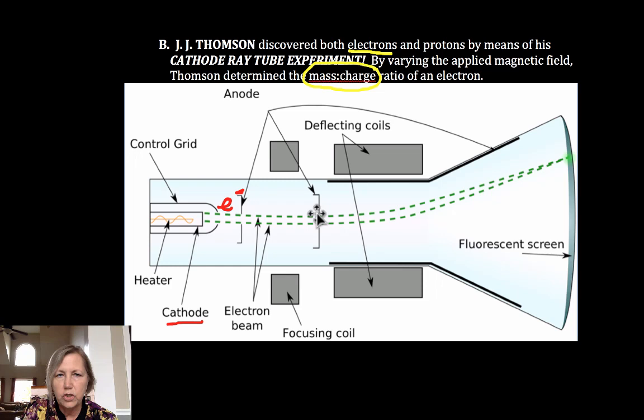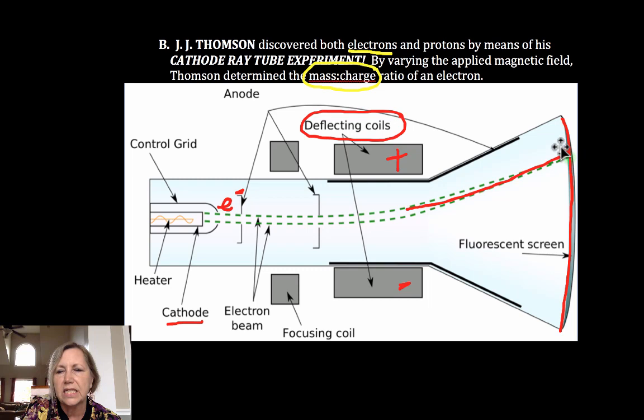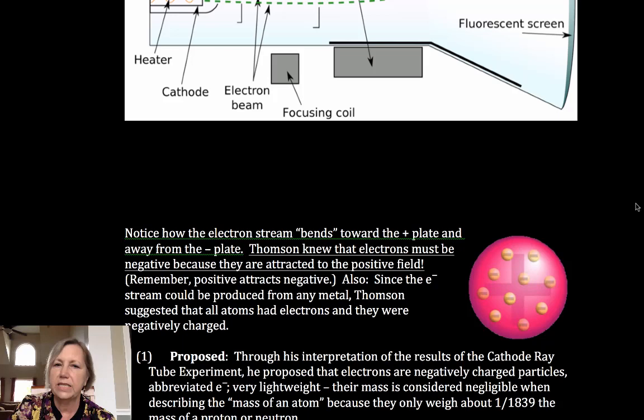So what he did is he had a cathode ray that emitted electrons. And they went through this focusing coil. You don't need to worry about that so much. Here's what's key are these deflecting coils. And you can do this with a magnetic field or an electric field, but the key is positive and negative with a magnetic field or electric field. And he noticed by having that ray impinge on a fluorescent screen so that you could visualize it, that the electron beam bent towards the positive. Well, since negative is attracted to positive, he proposed the negative electron.